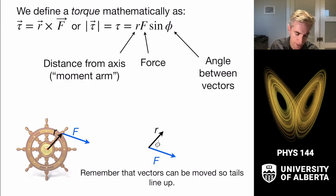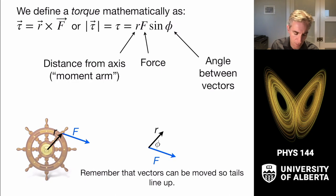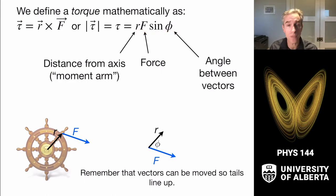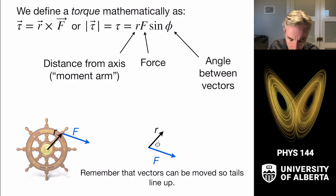Even though the force and the moment arm have a tip-to-tail relationship in practice, put those tails together to figure out the angle between them. When looking at a two-dimensional object from the top down — looking along the positive z-axis — we give signs to the torques: counter-clockwise rotation gets a positive torque and clockwise rotation gets a negative torque.